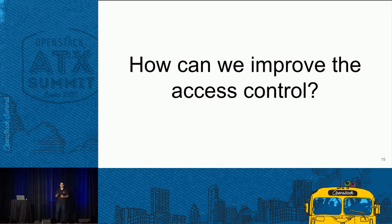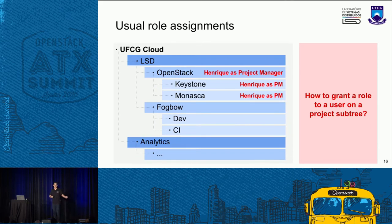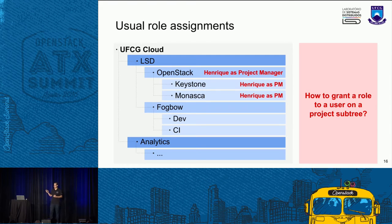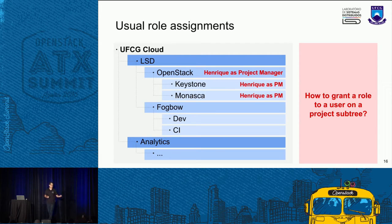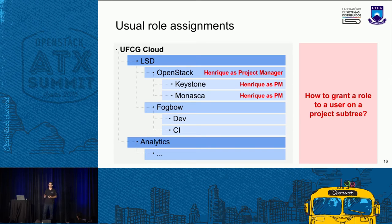How can we improve access control now that we have a hierarchy? Imagine Henrique is our project manager for every OpenStack project in our lab. We would need to repeat the grant for every project in the sub-tree — for Keystone, for Monasca, for every project we have. If someone creates a new project, we need to grant this role again. And if someday Henrique leaves our lab, we need to delete all grants for this user. If we forget to delete some grant, we have a security issue where Henrique keeps having access to our cloud. This is a real problem.